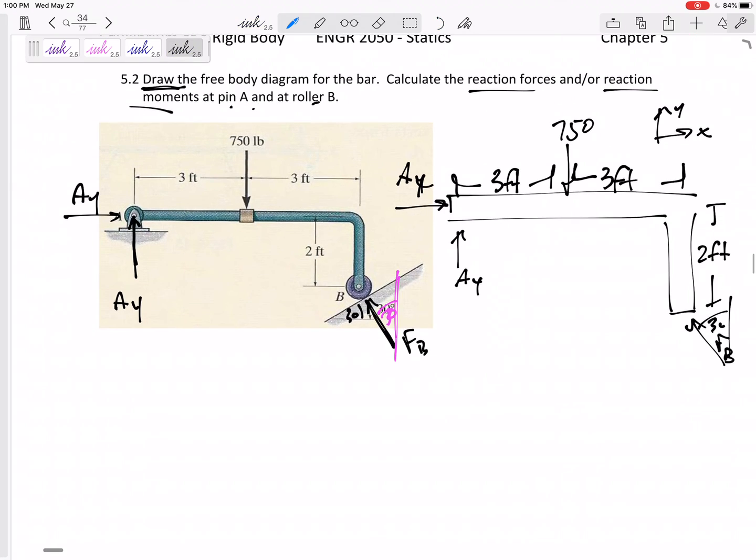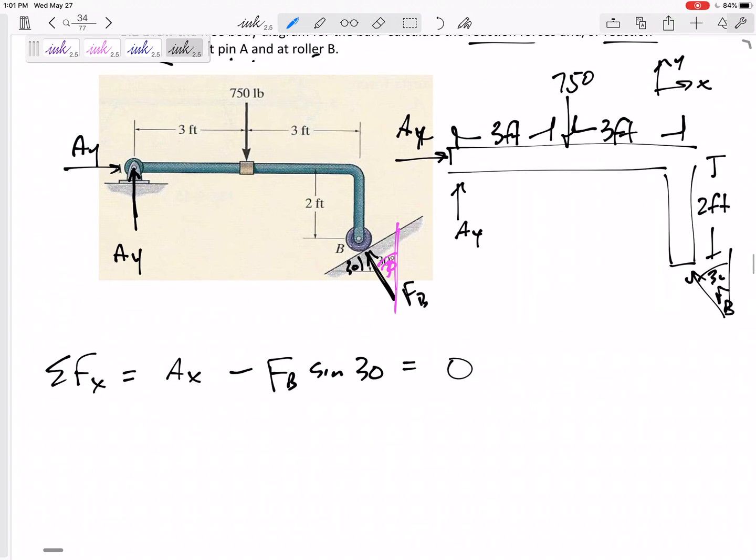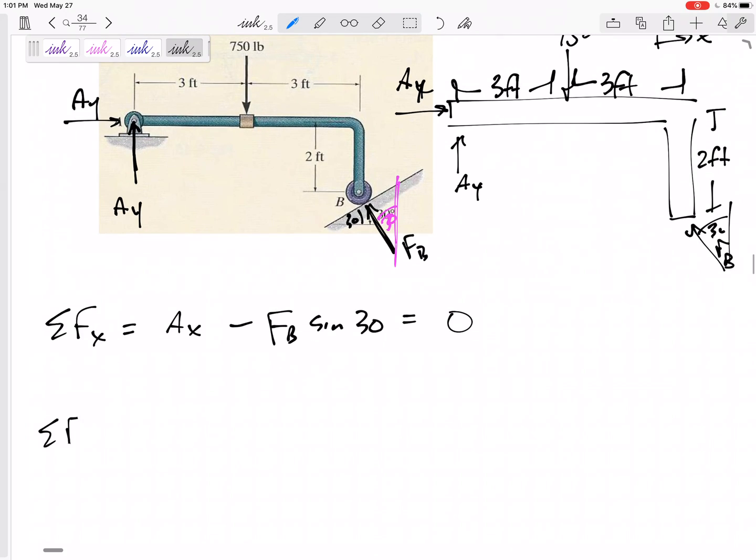Let me solve for the unknowns. What can I do? I can sum the forces in the x direction. Ax is in the x direction, and then let's see what component of Fb - Fb sine 30 - and that's it. Set that equal to zero. I wish that equation only had one unknown, but it has two unknowns, so I can't solve right away.